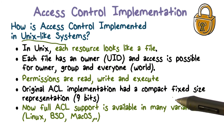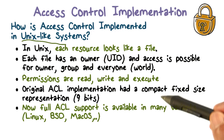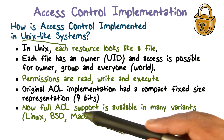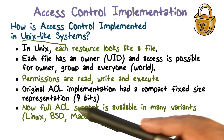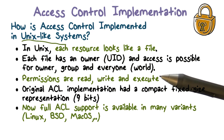This approach does have its limitations. We can only have three subjects or principals for whom access is controlled — just the owner, one group, or everybody. If we had 10 different users we wanted to give permission to, we can't have an arbitrary-size access control list with this representation. So operating systems now provide implementations of full ACLs, available in many operating systems including Linux, Mac OS, BSD, and so on.